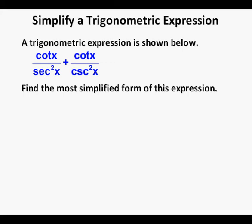This is the problem. A trigonometric expression is shown below. It's the cotangent of x over secant squared x plus the cotangent of x over cosecant squared x. Find the most simplified form of this expression.